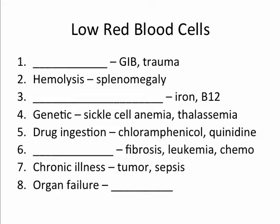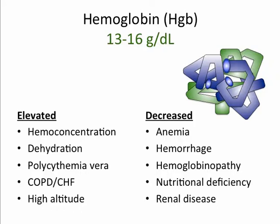Hemoglobin, found within the red blood cells, serves as a vehicle for oxygen and carbon dioxide transport. Hemoglobin may be increased when it's concentrated, as with dehydration, or when there's an excess of red blood cells as with polycythemia vera, or when you need more oxygen-carrying capacity as with COPD, congestive heart failure, and high altitude. Hemoglobin is decreased especially with anemias, hemorrhage, and renal disease.